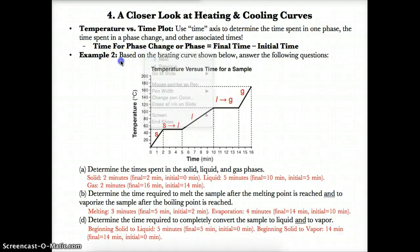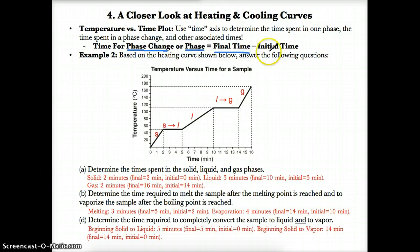The basic idea for heating and cooling curves is this: if you want to find the time for a phase change or a phase, you just have to find the final time for that phase or phase change and subtract the initial time for that phase or phase change from it.